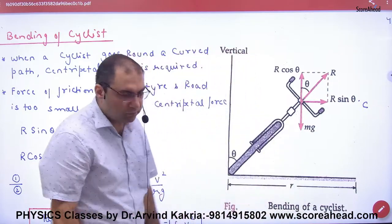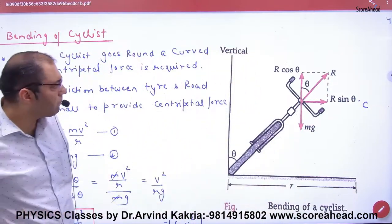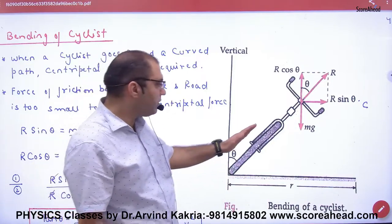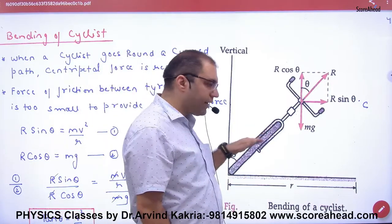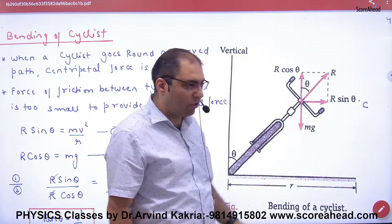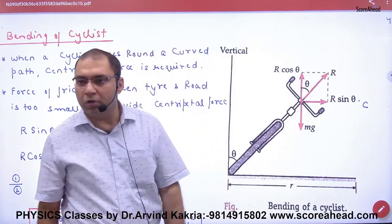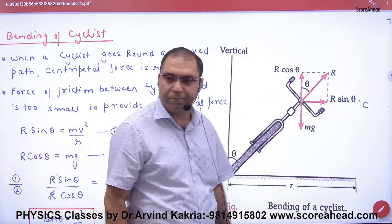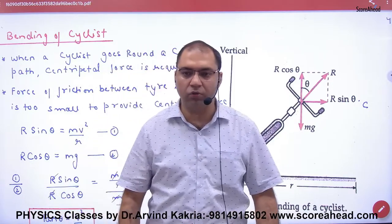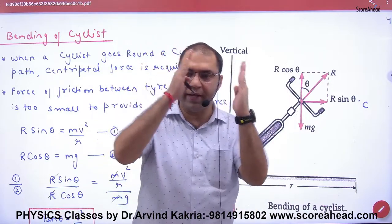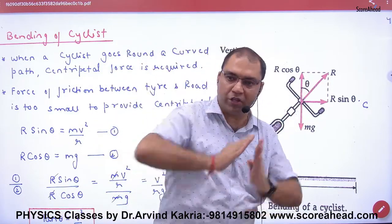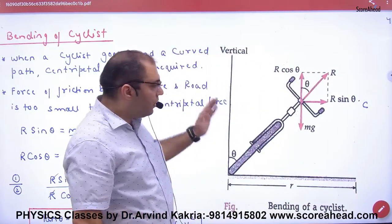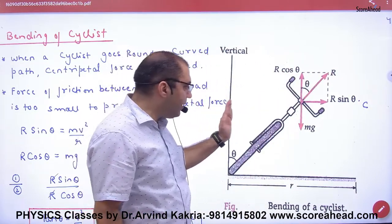Suppose there is a vertical line. This is the saddle, this is the tire of the cycle, this is the handle, and the man is on it. So what forces are acting? The man's weight is acting downward. If I am straight, the normal reaction R acts upward. If I bend with the vertical by angle theta, the normal reaction is R at angle theta.